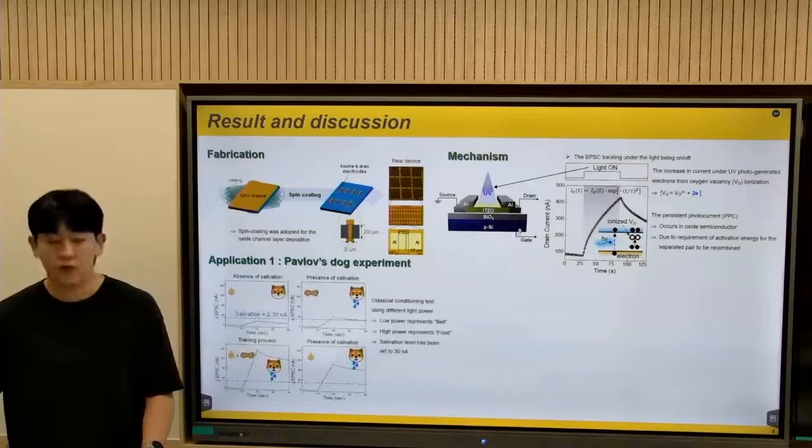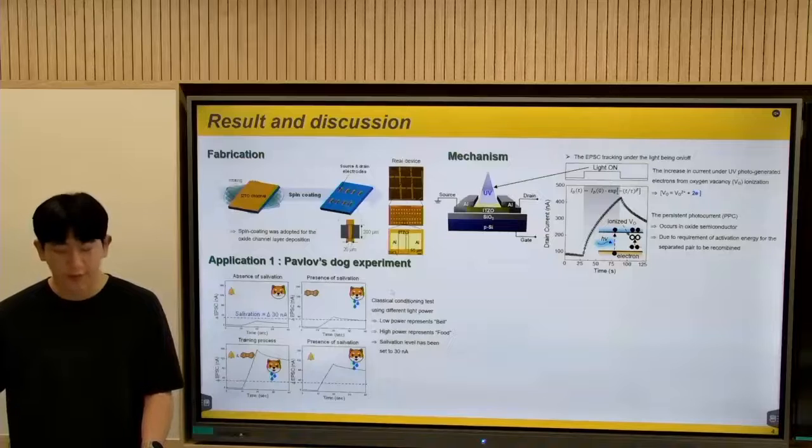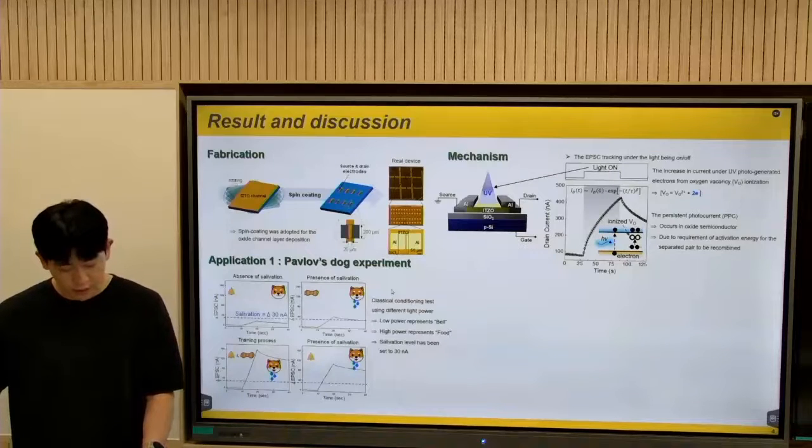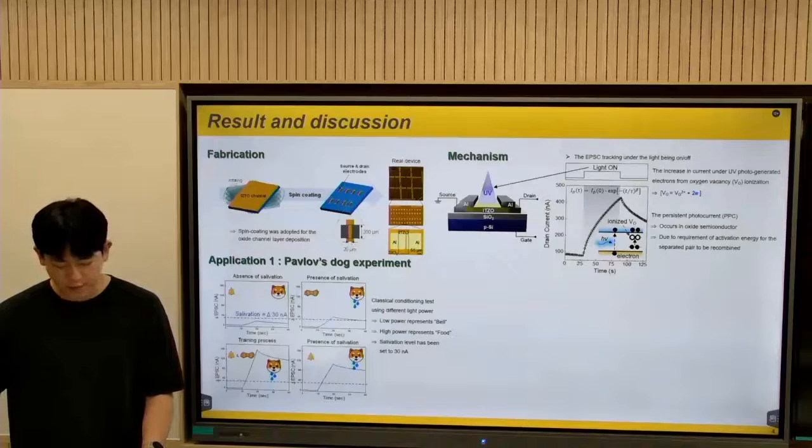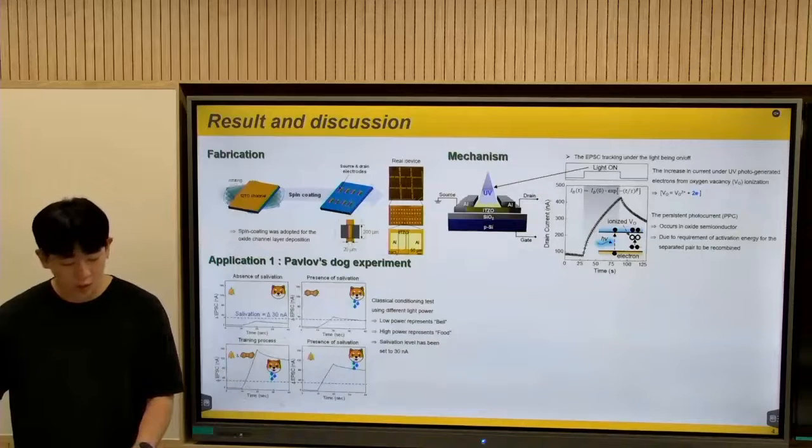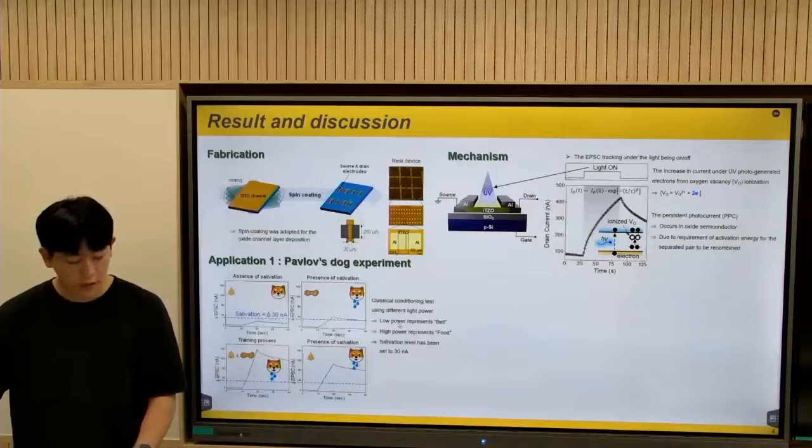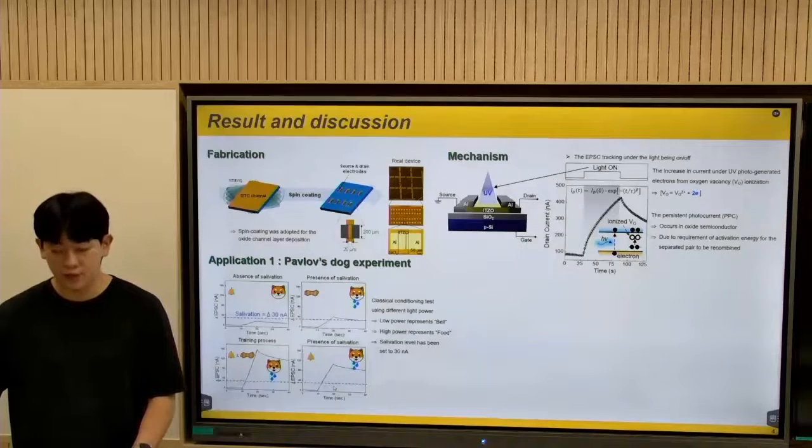Moving on to applications. Pavlovian dog experiment has been successfully emulated using low power and high power of UV representing bell and food respectively. Right after the training here, low power representing bell only could surpass the threshold indicating the cell evasion is generated.